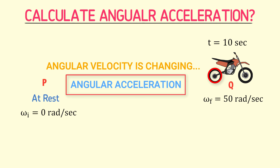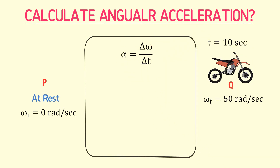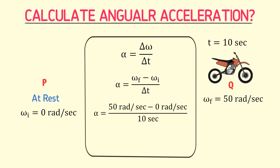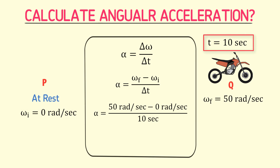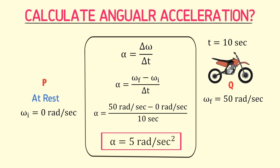The wheel of the bike possesses angular acceleration alpha. Applying the formula: alpha equals change in omega divided by change in time, which gives alpha equals final angular velocity minus initial angular velocity divided by time: (50 − 0) / 10 = 5 radians per second squared. Hence, the angular acceleration of the wheel of the bike is 5 radians per second squared.